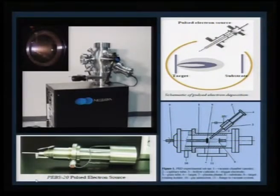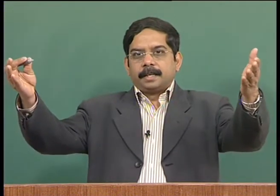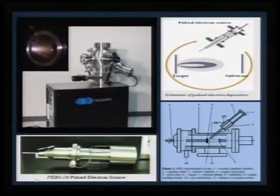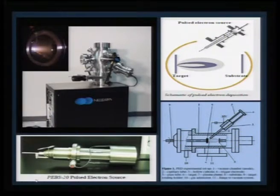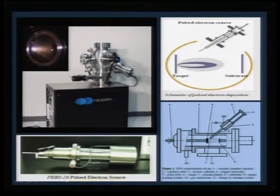Recapping the previous PLD lecture, the PLD instrument is quite large because the laser plume must enter the vacuum zone requiring several optics and a large laser system. Comparatively, PED is a very compact process that can be installed in lesser space. The key dimension in a PED system is the pulsed electron source, called the PEPS source, which is the core of the PED technique.